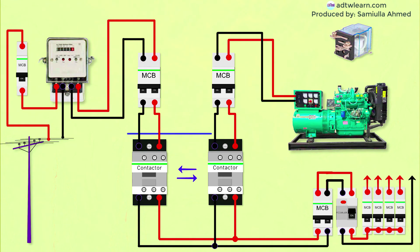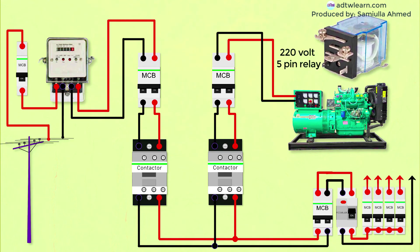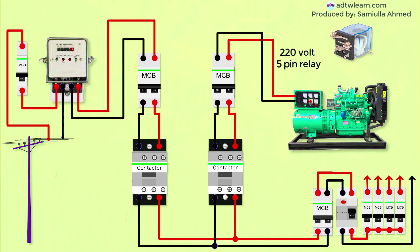Now we should interconnect the contactors so that when there is no power from the electric pole, the generator should switch on and supply current to the distribution board. This switching on of the generator can be done by this 220-volt 5-pin relay. Take the supply lines from the main electric supply from the pole and connect them to the relay.